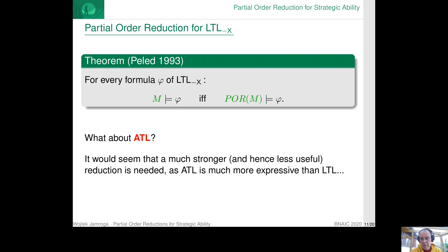Now, let's go back to ATL. So let's go back to the specification of the abilities of, say, the coercer or the voter. Obviously, the logic is much stronger, much more expressive. So it would seem that a much stronger and hence less useful reduction is needed.